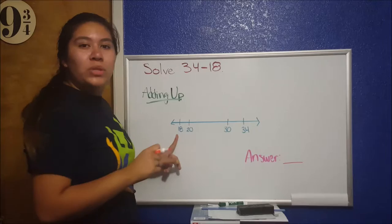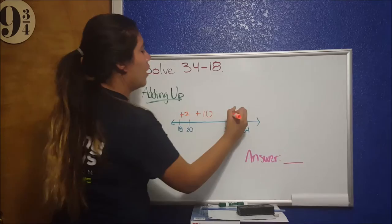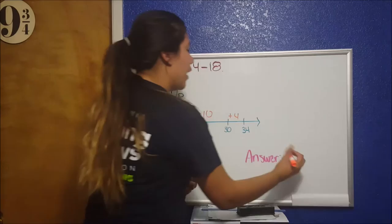Let's try and think of tens. It takes 2 to go from 18 to 20, 10 from 20 to 30, and 4 from 30 to 34. Add all these up and we get 16.